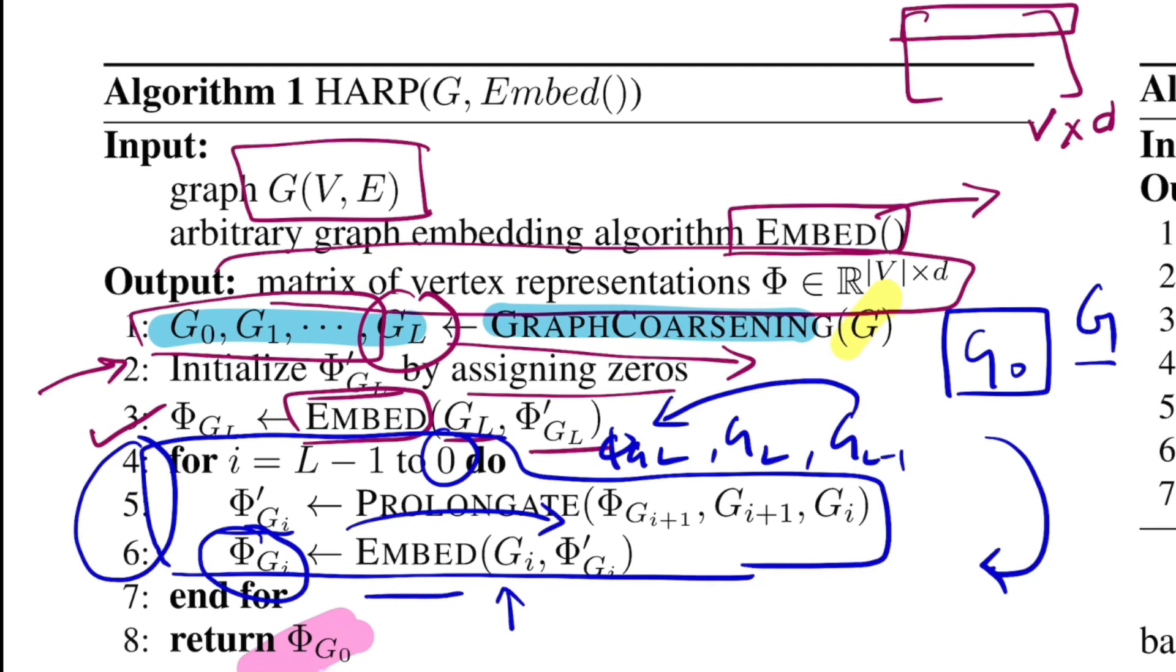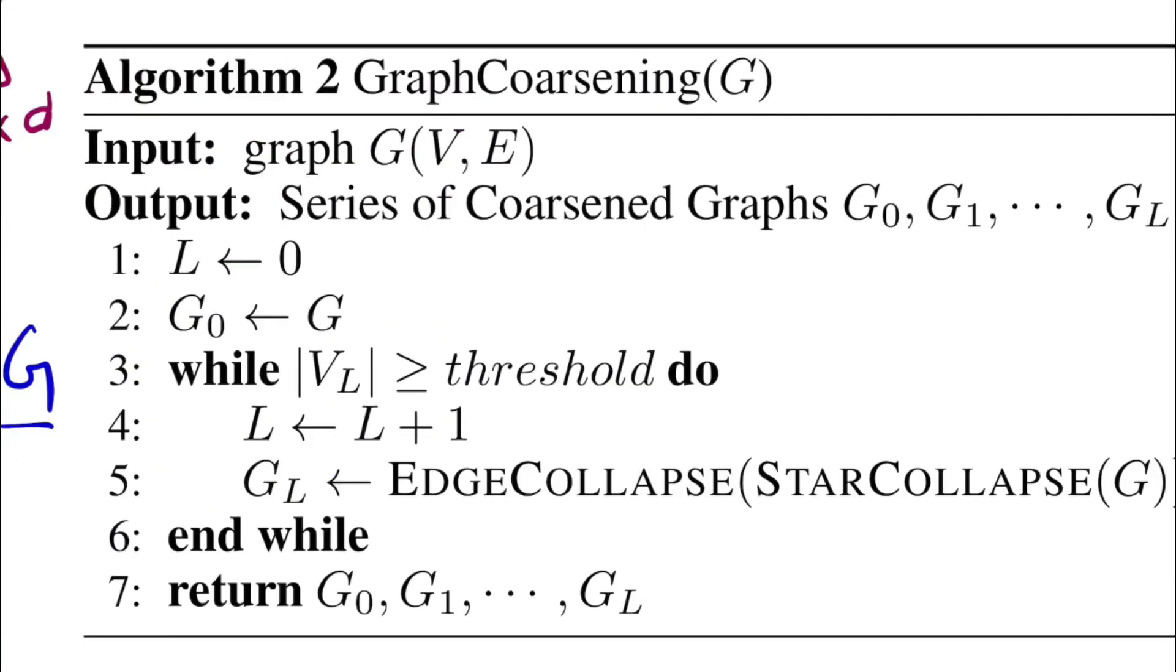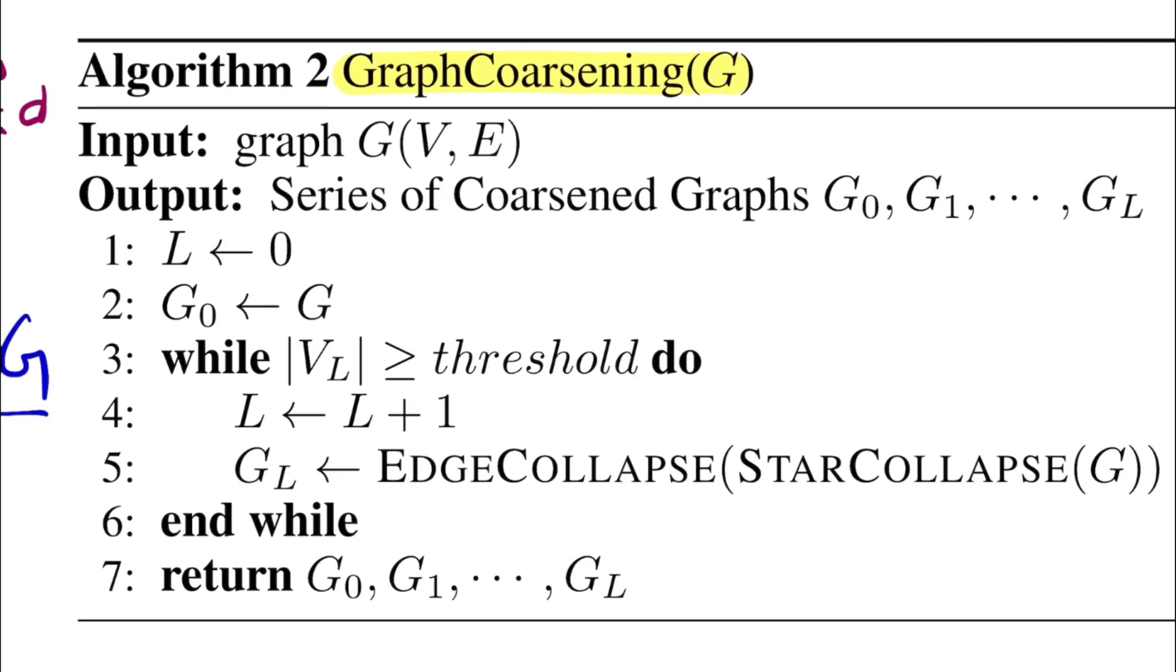Now let's focus on graph coarsening. This algorithm talks about how graph coarsening happens. Given graph G, it takes in graph G with V vertices and E edges. The idea is to produce an output which is series of coarsened graphs, G0 to GL. Start with L equals zero and assign G0 to be G. Considering the first coarsened graph to be G0, this is the original graph. Let it have 200 vertices and they use threshold to be 100. If 200 is greater than or equal to 100, which holds true, then you increase the level.